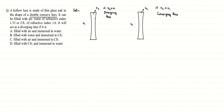That means any ray parallel to the principal axis, after striking it, will diverge out. And any ray parallel to the principal axis will converge towards the principal axis if the refractive index of the material of the lens is less compared to the refractive index of the surrounding air.